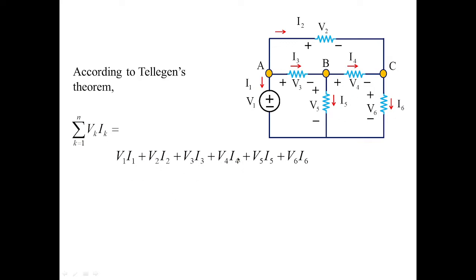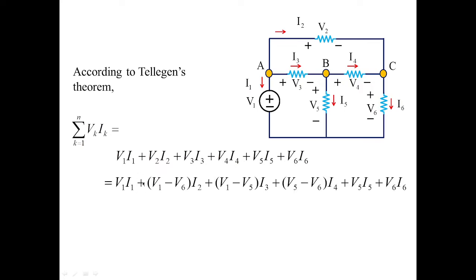Now I am going to take individual branch voltages and currents step by step. First, V1I1: this is the branch voltage between node A and reference 0, and both are positive because I1 enters the positive terminal. Next, V2 is situated between A and C. Treating VA as V1 and VC as V6, we get V2 equals V1 minus V6, so the branch power is (V1 minus V6) times I2.